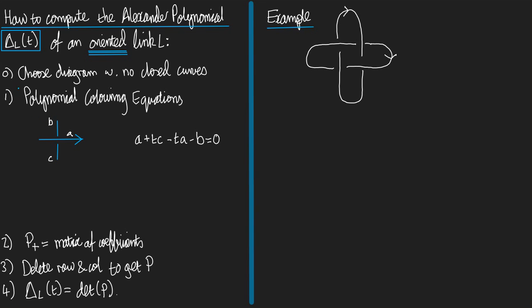Step zero: Choose a diagram with no closed curves. Here I am on the right, I've chosen my diagram with no closed curves there. Step number one: Write down the polynomial coloring equations. If I start with a crossing in my diagram whose arcs are named a, b, and c, then the polynomial coloring equation is this equation right here.